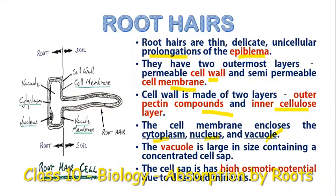The vacuole of root hairs has a higher concentration compared to the soil water, so they have a high osmotic potential. This high osmotic potential helps in the absorption of water from the soil.